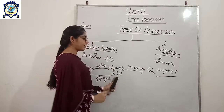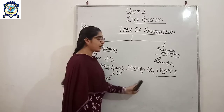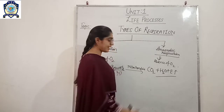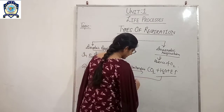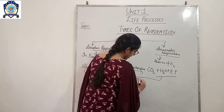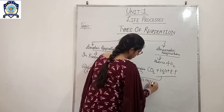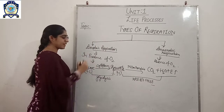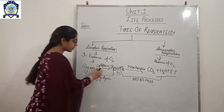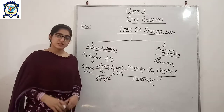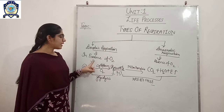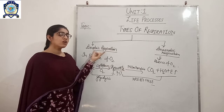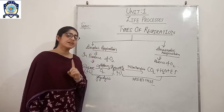Pyruvate is further broken down in the mitochondria — which is called the energy currency of the cell — where it is broken down into CO2, water, and energy. This further breakdown occurs in the Krebs cycle. This is an example of aerobic respiration, because it occurs in the presence of oxygen.